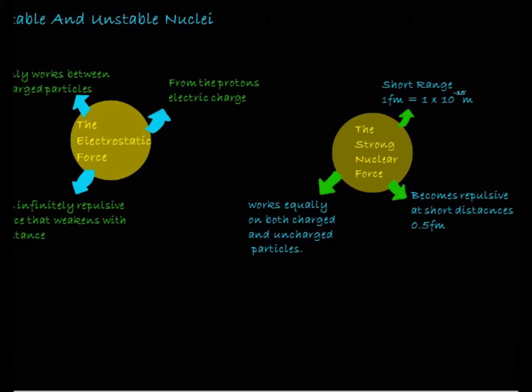But this comes with its own problem. The nucleus, under the rule of this force, would collapse to a point because it can't overcome this attractive force. This means that at a very small distance, around 0.5 femtometres, the strong nuclear force must become repulsive.